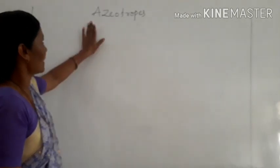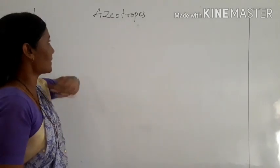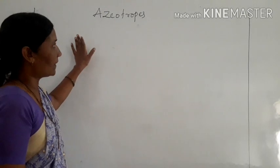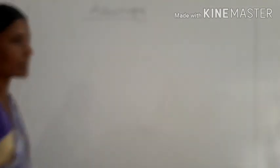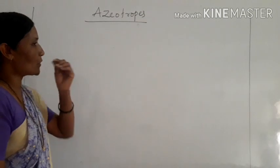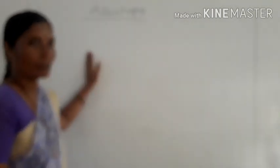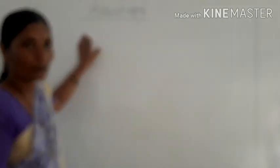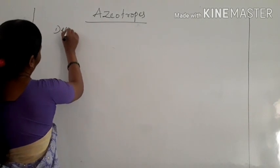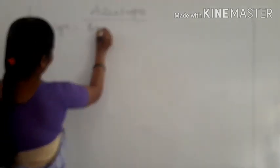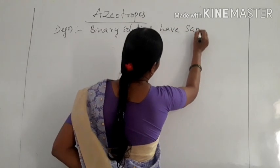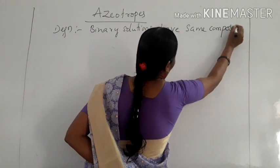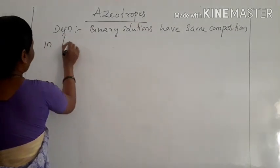In such type of solutions, there is one term known as azeotropes. Azeotropes are binary mixtures or solutions which have the same composition in liquid as well as vapour phase, and they boil at constant temperature.